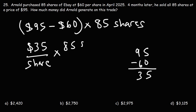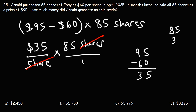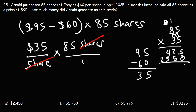Now we're going to multiply that by 85 shares. The unit 'shares' will cancel, and we'll get how much he made in total. So let's multiply 85 and 35 together. 5 times 5 is 25 — carry over the 2. 8 times 5 is 40, plus 2, that's 42. Write the 0. Move on to the next digit. 3 times 5 is 15 — carry over the 1. 3 times 8 is 24, plus 1, that's 25. Now we add: 5 and 0, 2 plus 5 is 7, 4 plus 5 is 9, and bring down the 2. So the total amount of money that he made on his trade is $2,975. Answer choice C is the correct answer.